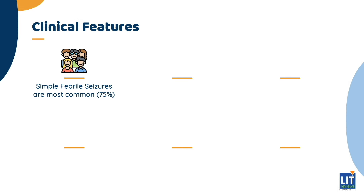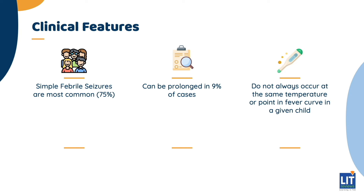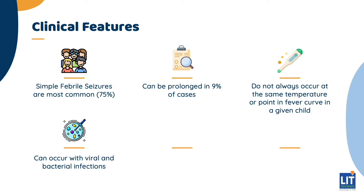Simple febrile seizures are the most common type and typically account for about 75% of cases. Complex febrile seizures are more unusual, with seizures found to be prolonged in about 9% of cases and focal in less than 5% of cases. Seizures do not always occur at the same temperature or point in a fever curve, even for a given child. Febrile seizures can occur with viral or bacterial infections, though there is an increased risk specifically with HHV-6 infection, as evidenced by a febrile seizure rate of 13% in one study.